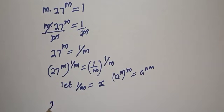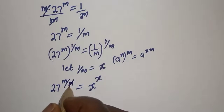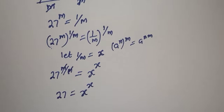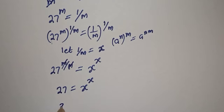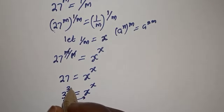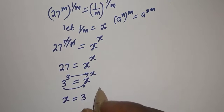From here we have 27 raised to power m over m, which equals s raised to power s. This simplifies so 27 equals s raised to power s. Since 27 is 3 raised to power 3, and the base equals the exponent, therefore s is equal to 3.